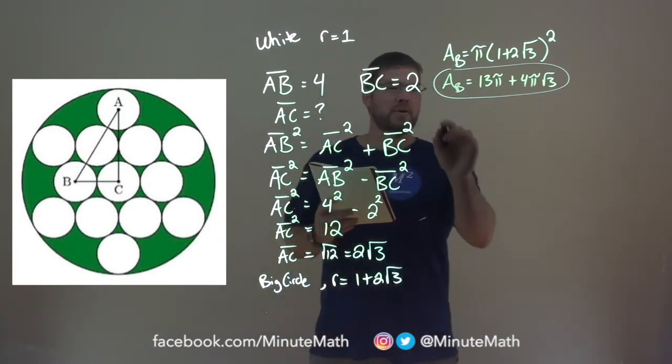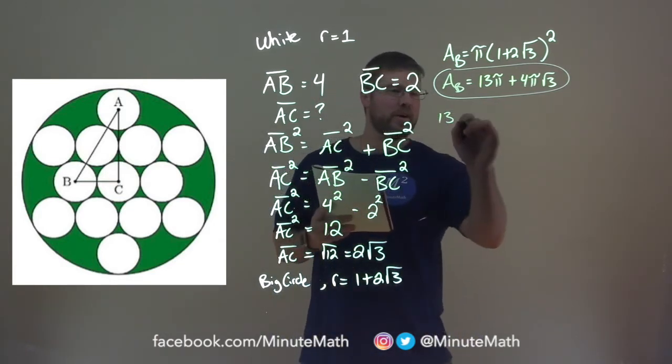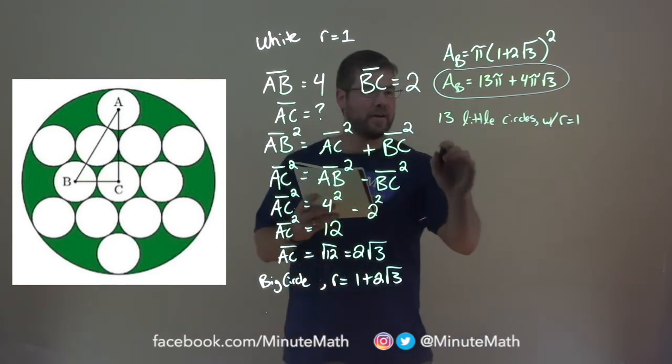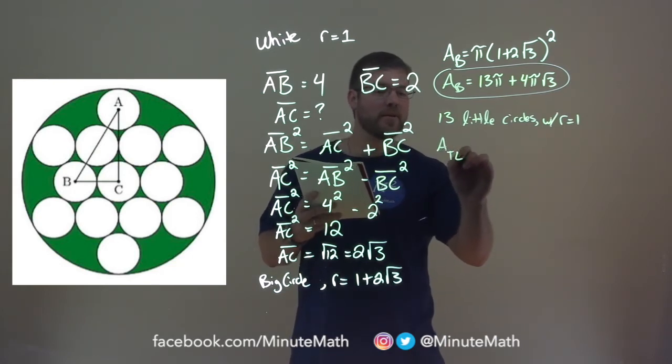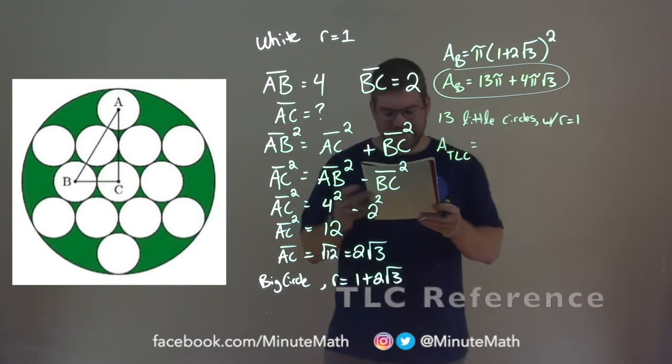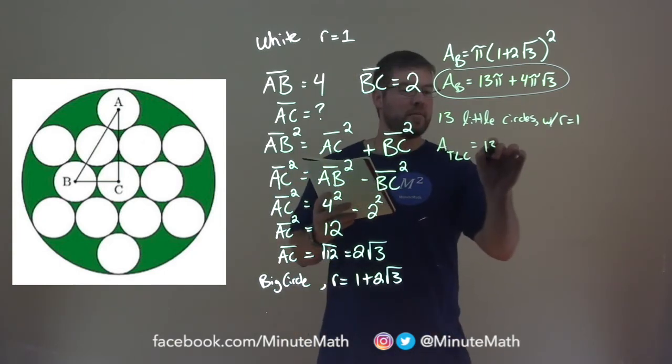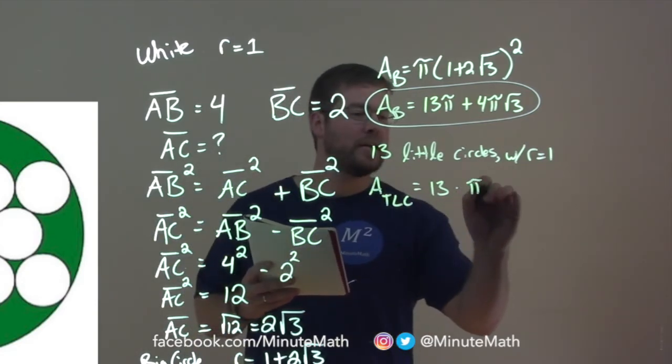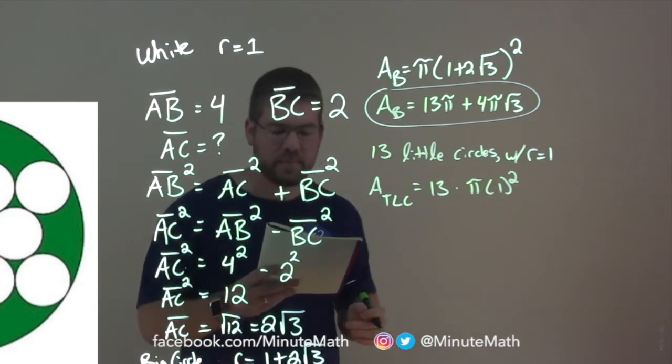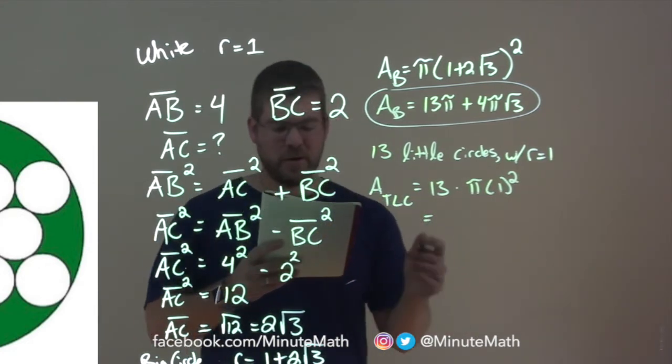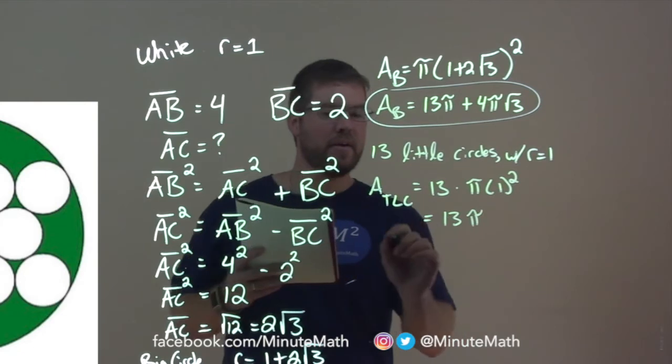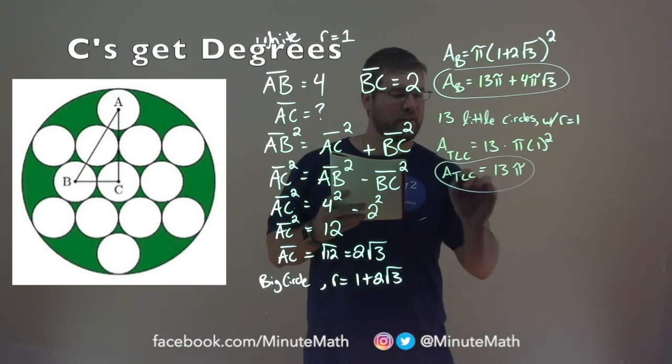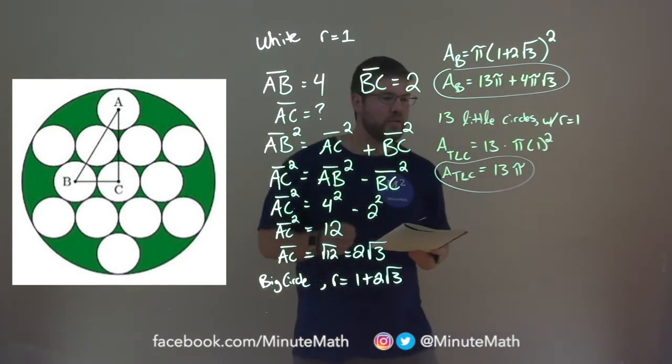But we have 13 little circles, right? With a radius of 1. So the area of the total little circles is equal to, well, there's 13 of them, times the formula for the area of each circle, pi r squared. So we have pi times r, which is 1, and we square that, and that comes out to be a total of just 13 pi. So the area of the total of the little circles all together is 13 pi.